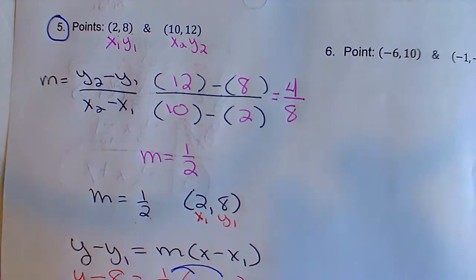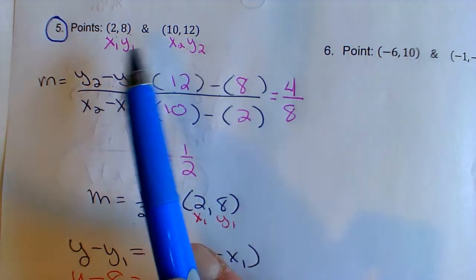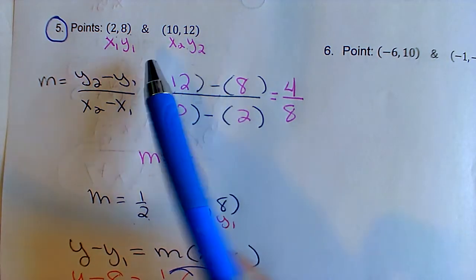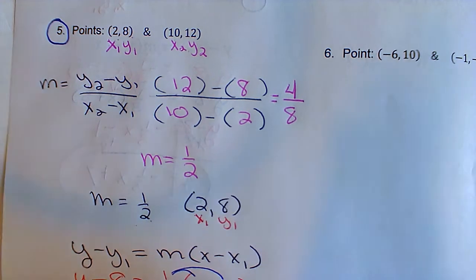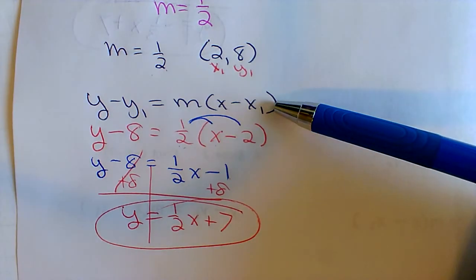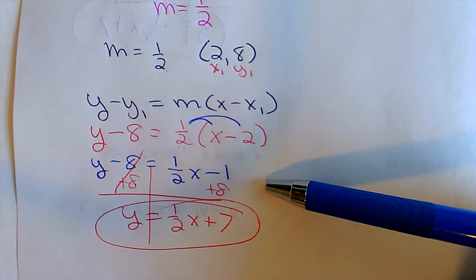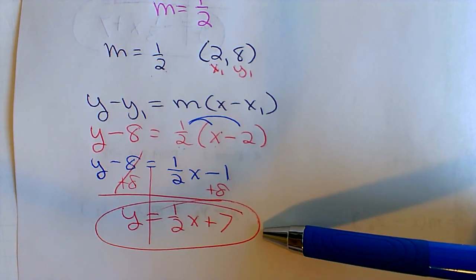Now to use the point-slope formula, I'm going to use the slope we just found and pick one of those two original points. It doesn't matter which one you picked, I picked (2, 8). Then after that, all you're doing is plugging it into the equation. I didn't have any double negatives, I didn't have to fix that, but next I would distribute and then I would add the constant to the other side. And I've got my answer 1/2x plus 7.